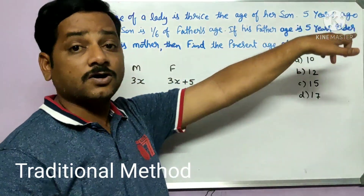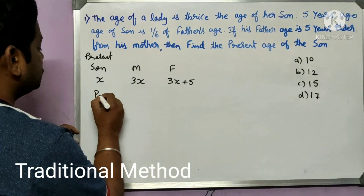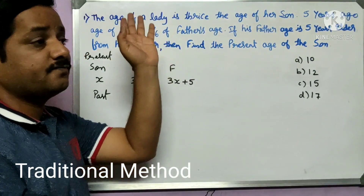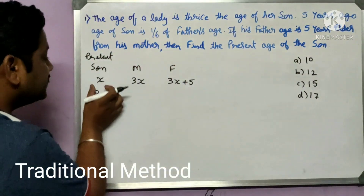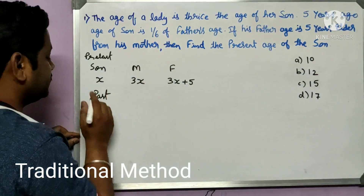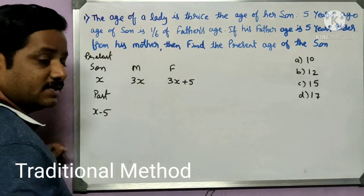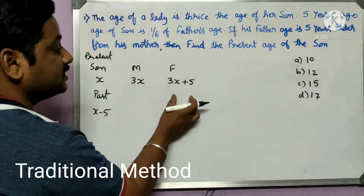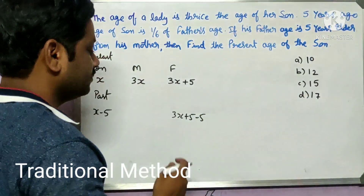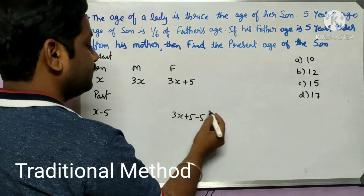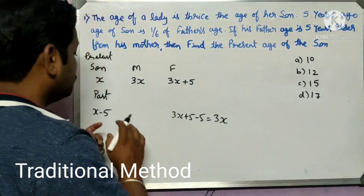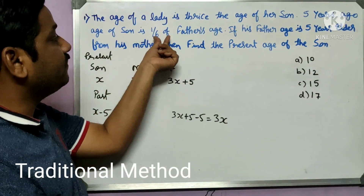Now for the past condition — five years ago. The age of the son five years ago will be x minus 5. The father's age five years ago will be (3x + 5) minus 5, where the plus five and minus five cancel, giving us 3x.